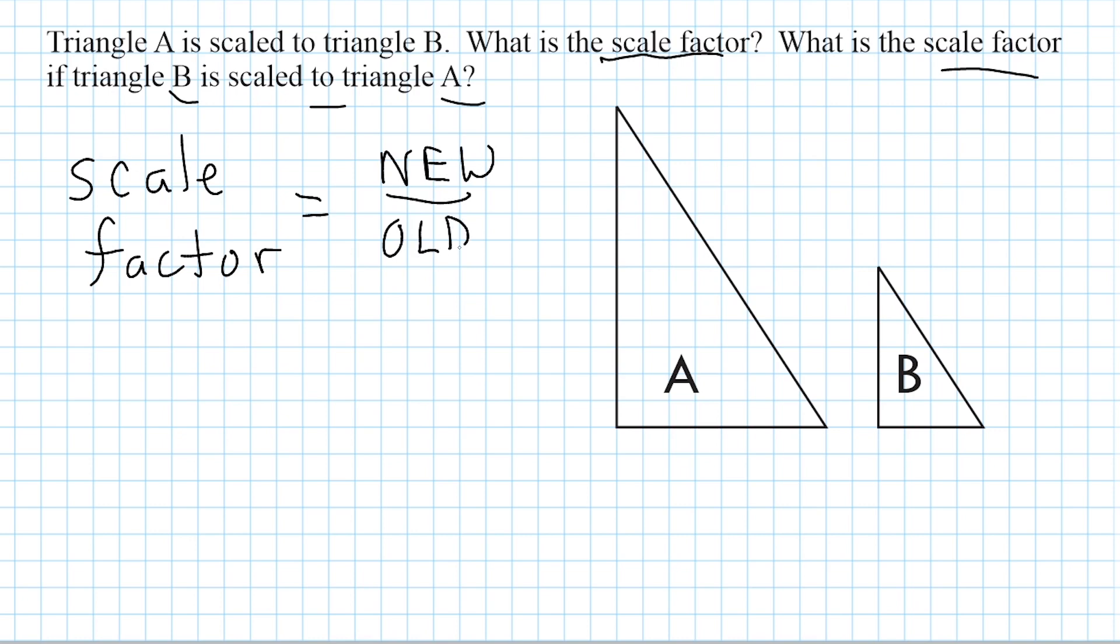Now here's what I mean by that. So if we're scaling from A to B, the new would be B because that's where we're going. So what you do is we start by looking at the shape and we identify a set of corresponding sides. I'm just going to take the base of each triangle and determine its length by using the graph paper that it's located upon.